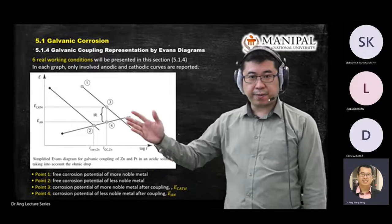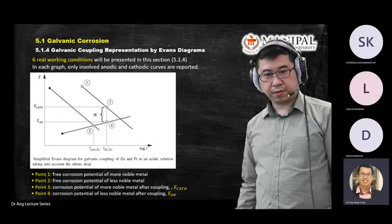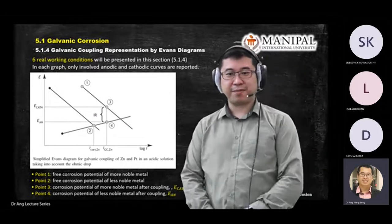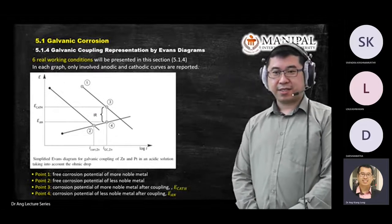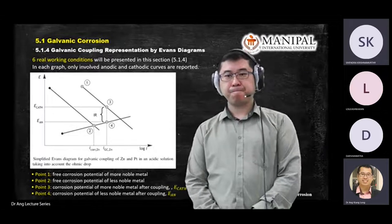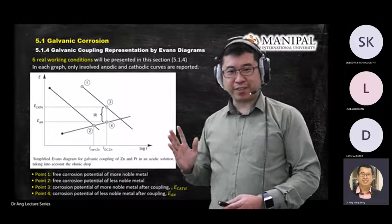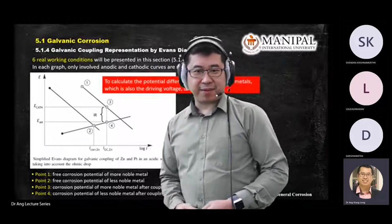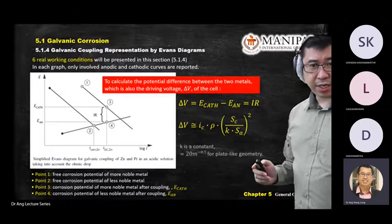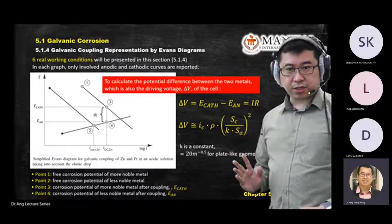Any questions on labeling points one, two, three, four? Ask me now — this is important for your final exam. I stress again: this is important, I've already given you hints. We also have all the calculations here. The difference of voltage (delta V) is the difference between the two potential values, and there is a calculation for IC — the current density — using the constant rho, cathode surface area SC, and another constant K.